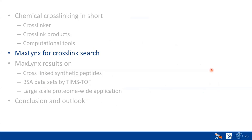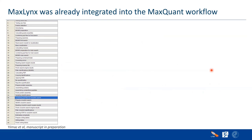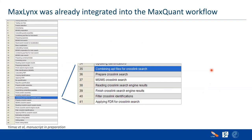Now let's talk about MaxLinx. MaxLinx is a new feature that I have been working on for a while, and I'm happy to be showing it now. MaxLinx is already integrated into the MaxQuant workflow. It starts with a similar process, and then there's a step called 'Combine API for cross-link.' When you enable the cross-link module, this step is added. You will also notice that in addition to the standard Andromeda folder for conventional searches, there is now an Andromeda 2 folder.